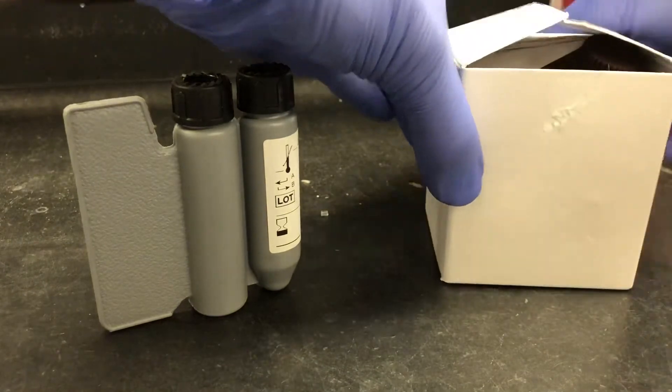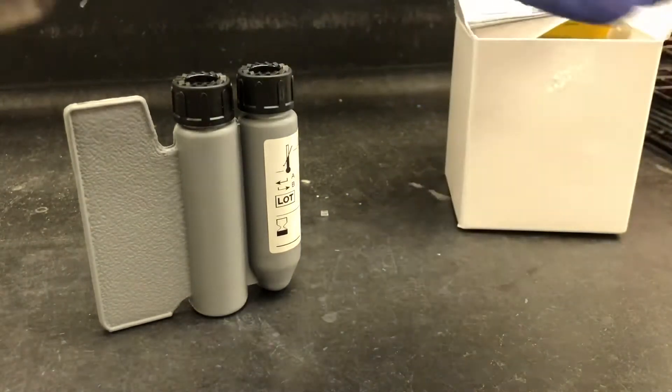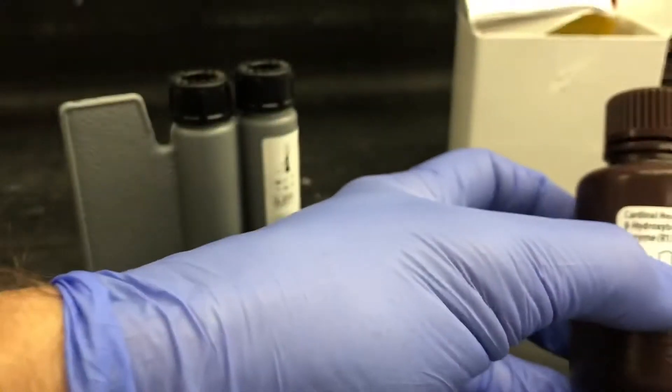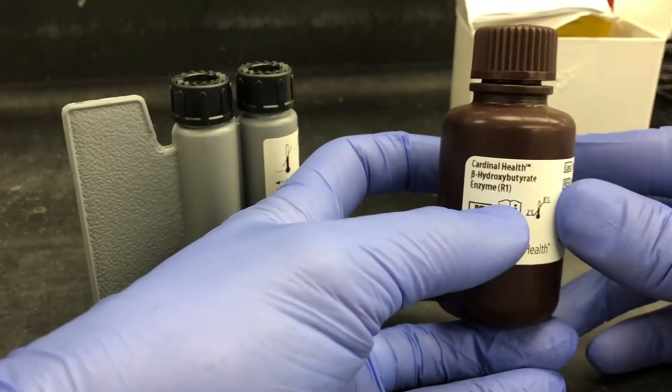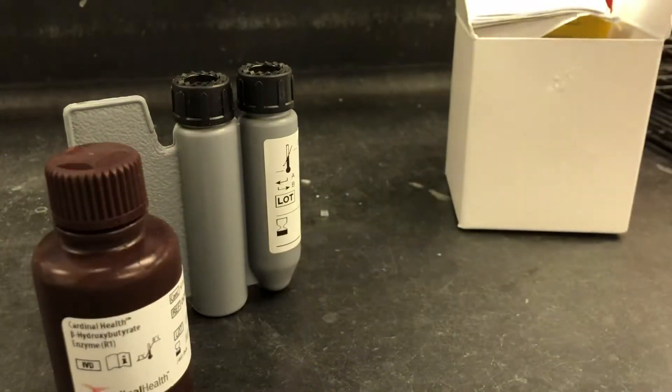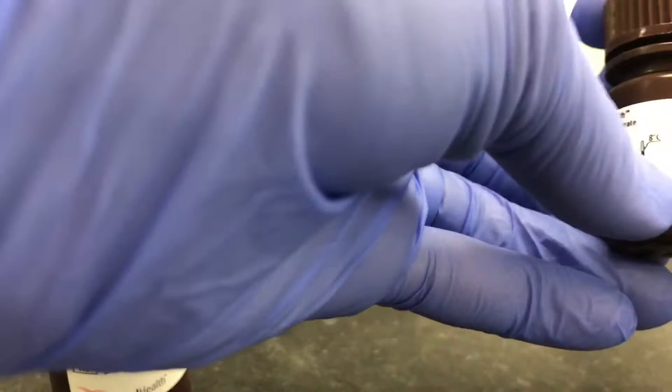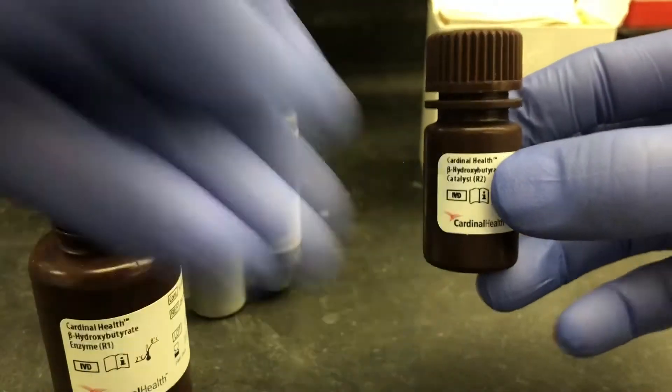Just so you can see what the contents of one of these reagent kits looks like. In the beta-hydroxybutyrate, you have one container labeled for R1 and another container labeled for R2.